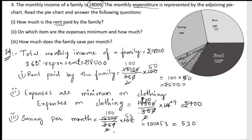So 53 × 100 = 5,300. The family saves ₹5,300 per month.